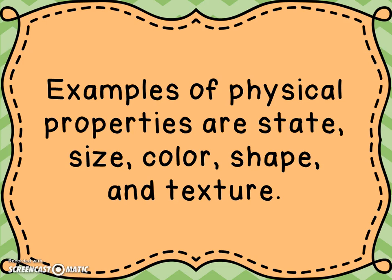The shape — what shape is it? And the texture — is it rough, is it smooth? So these are all examples of physical properties that help scientists to sort and classify objects.